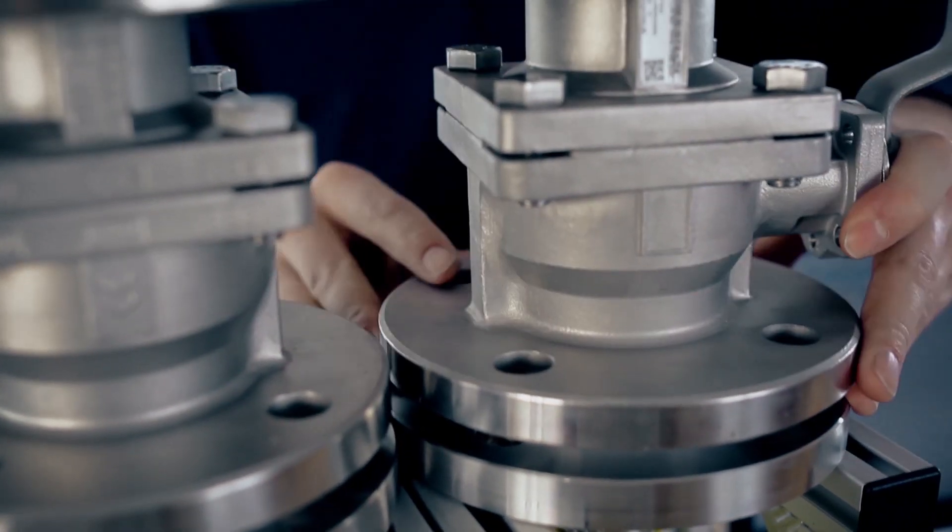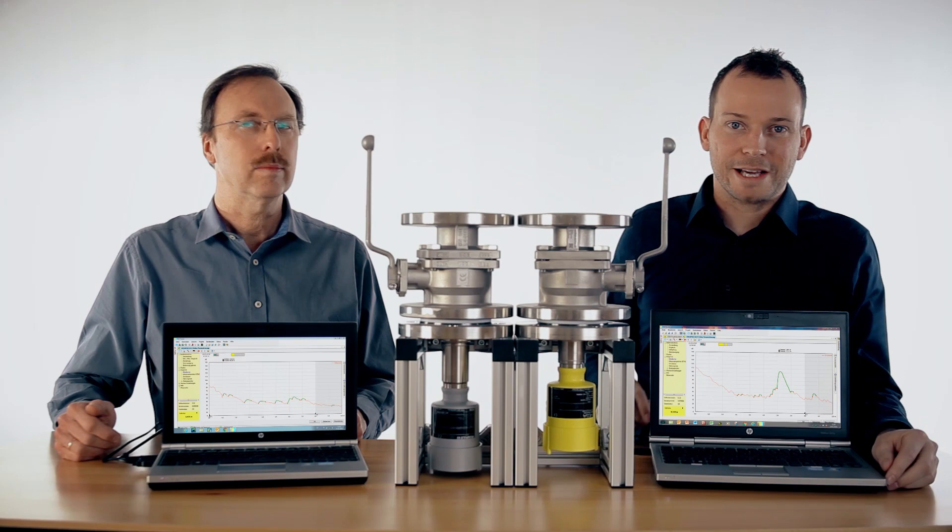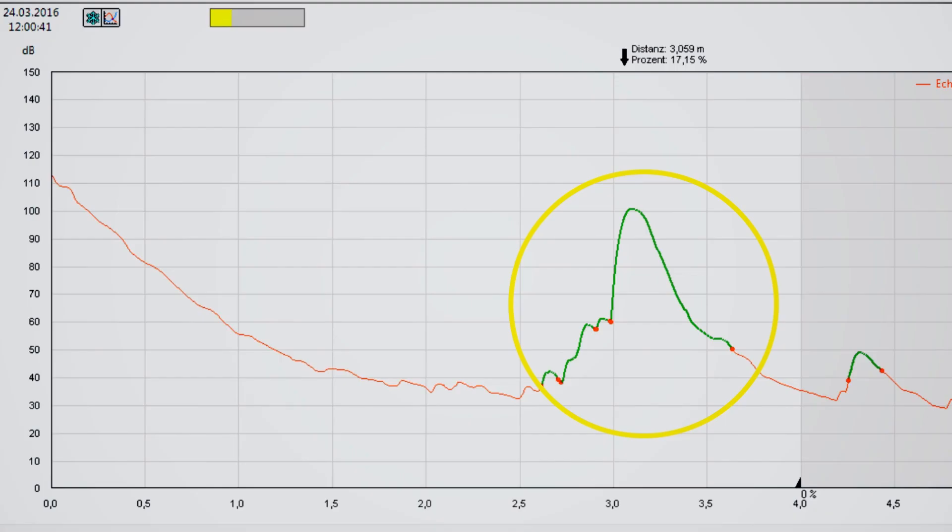On this side we also put a ball valve on the top of the Vega Pulse 64. We have a look at the echo curve. You see there is a slight change in the signal but there is not a big problem for the sensor. It gets no false reflection and it still has a very nice product echo to measure.